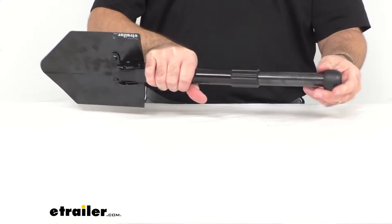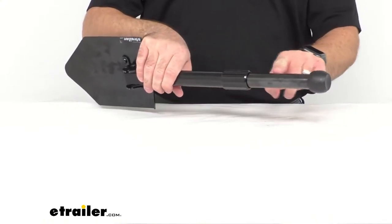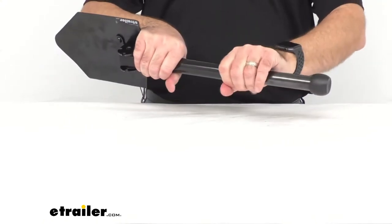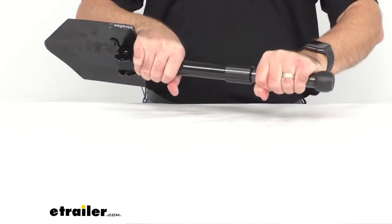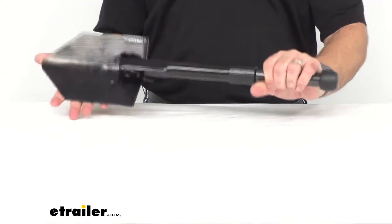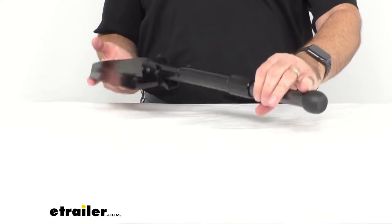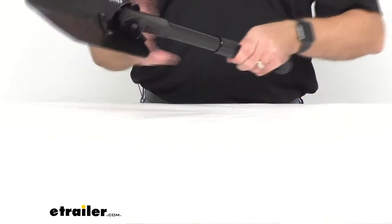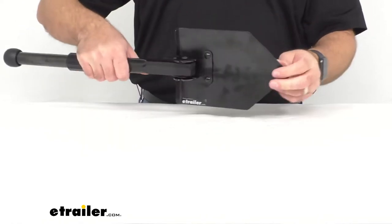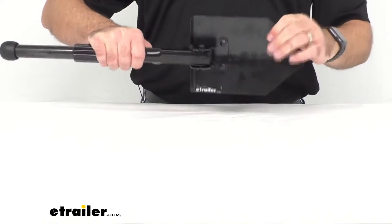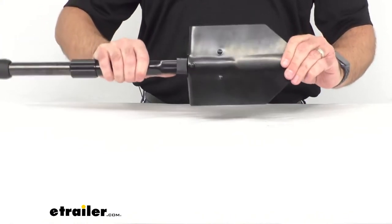So this has a tubular steel shaft so it is nice and sturdy and secure and it has a pretty decent weight to it. And the shovel blade is going to be tough and it's going to be a tempered shovel blade.